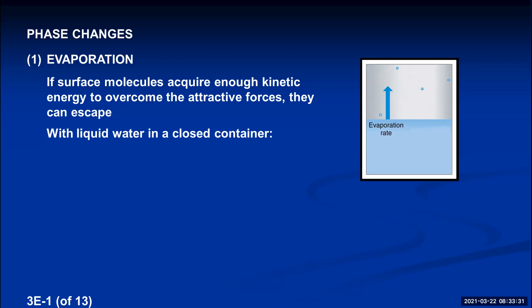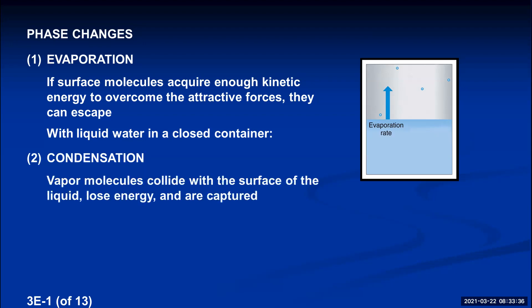If the vapor molecules lose their kinetic energy upon collision, the attractive forces can recapture them and they turn back into liquid. As you build up vapor in a closed container, the opposite process — condensation — begins. This is when vapor molecules collide with the surface of the liquid, lose their energy, and are captured. Initially, with only a few vapor molecules, the rate of condensation is low. If the evaporation rate is greater than the condensation rate, evaporation dominates and you start to build up more vapor.